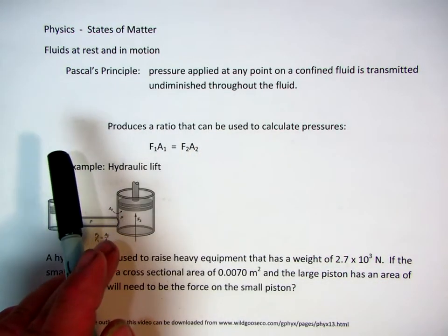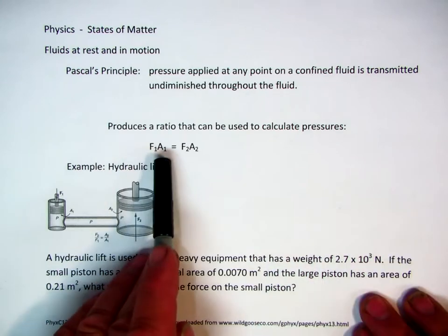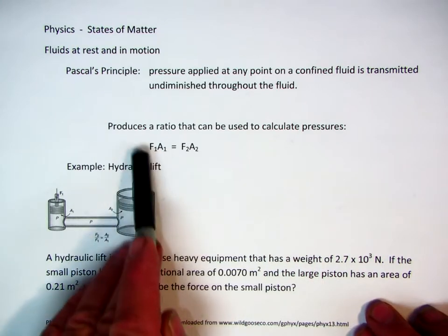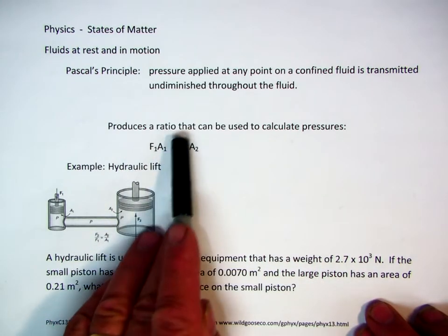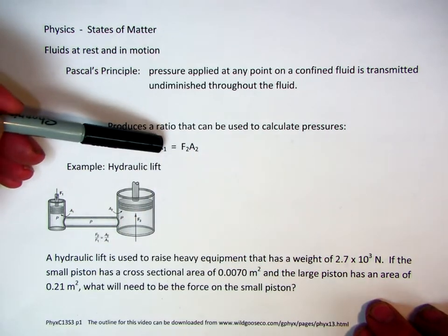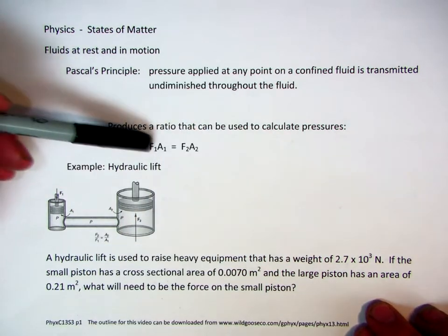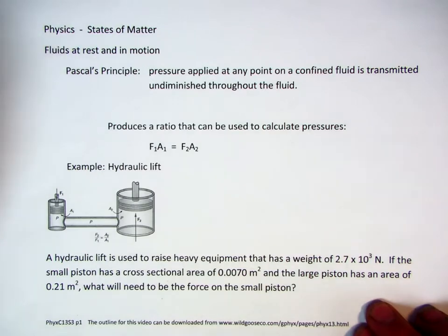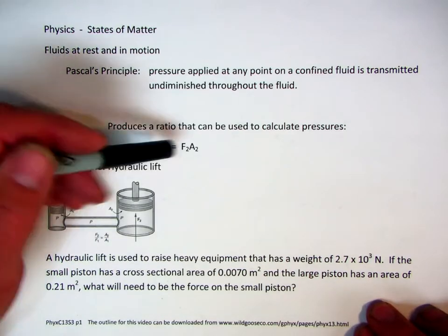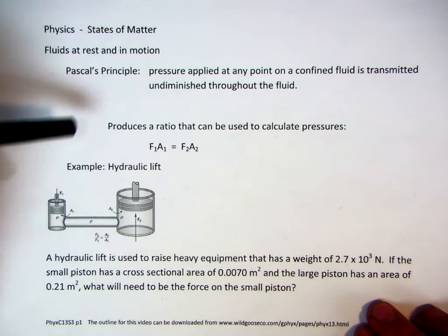It produces a ratio that can be used to calculate pressure. So the force times the area, which we referred to as pressure earlier, is equal to the new force times the area. Now the area can be in any units but the force has to be in units of newtons here. We could use the same ratio in other things but we're going to use it in newtons.